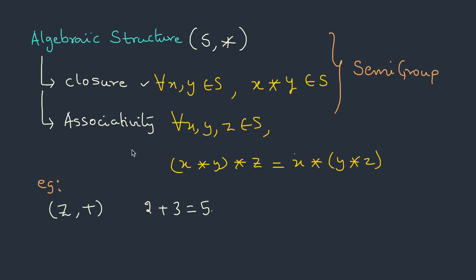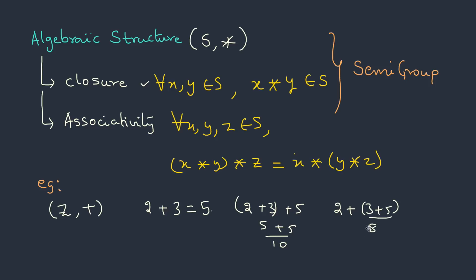Now for associativity, pick three elements: 2, 3, and 5. Adding them: (2 + 3) + 5 — two plus three is 5, and 5 plus 5 is 10. Alternatively, 2 + (3 + 5) — three plus five is 8, and 8 plus 2 is 10. The two results are equal, so it follows associativity. Therefore, addition over integers forms a semigroup.